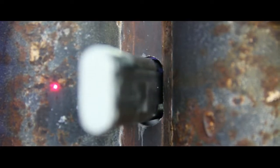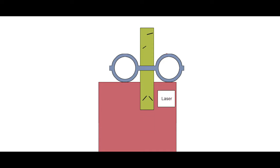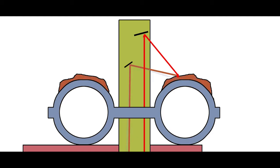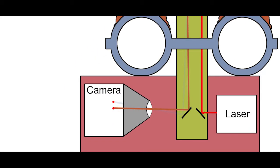A sensor head periodically moves into the furnace for about two seconds. A laser beam creates a light spot on the fouling surface. A camera looking through the sensor head's optics detects the laser's reflection. When the fouling builds up, the image of the laser spot moves along the camera sensor. A processor analyzes the distance between the initial image, when the tube was clean, and the current image, and calculates the thickness of the fouling.